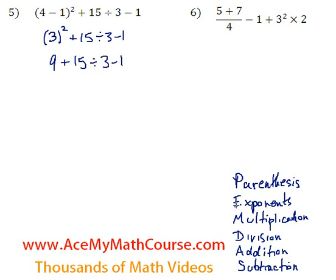Then we don't have multiplication in this case, but we have division. 15 divided by 3 is 5.